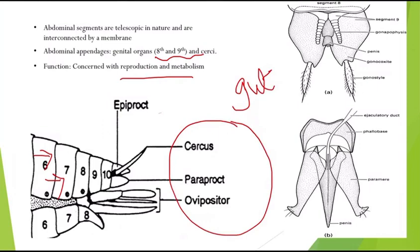These are the three structures representing the general organization of an insect's body. With that we have finished this topic. In the next class we will see the endoskeleton of an insect's body. Thank you for watching.